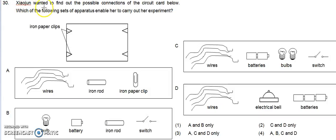30. Xiaoqin wanted to find out the possible connections of the circuit card below. Which of the following sets of apparatus enable her to carry out her experiment?